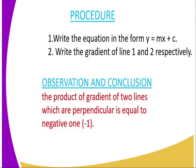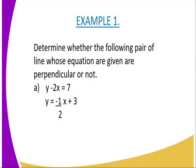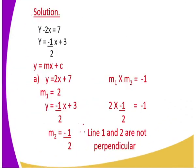For example, in the first example given — y minus 2x equals 7 and y equals negative one-half x plus 3 — you solve it as follows. Write y minus 2x equals 7 in the form y equals mx plus c. After converting, it becomes y equals 2x plus 7. Therefore, the gradient of line one is 2.